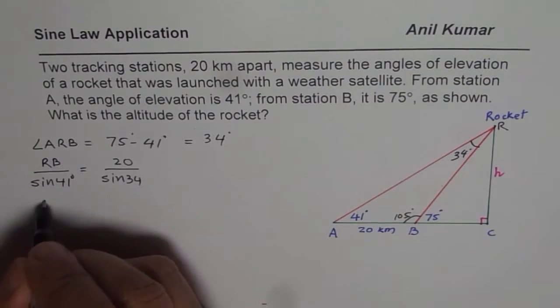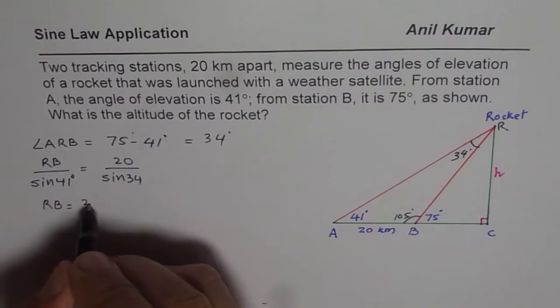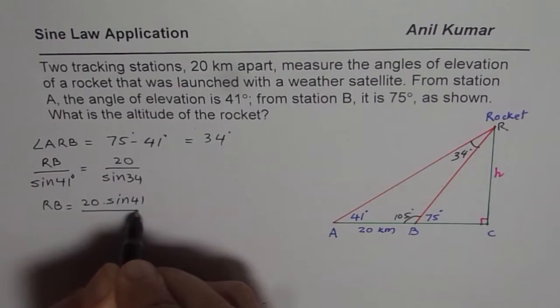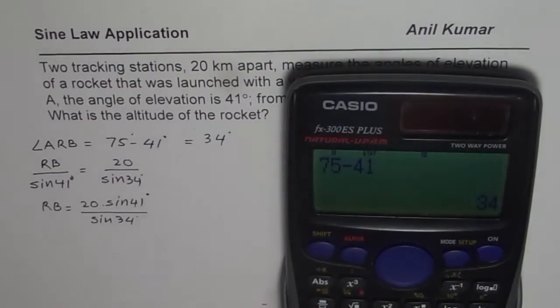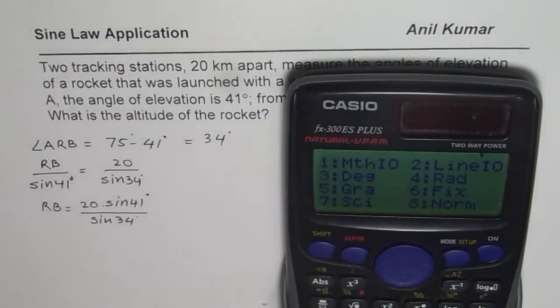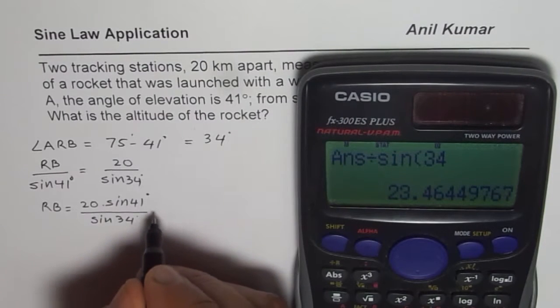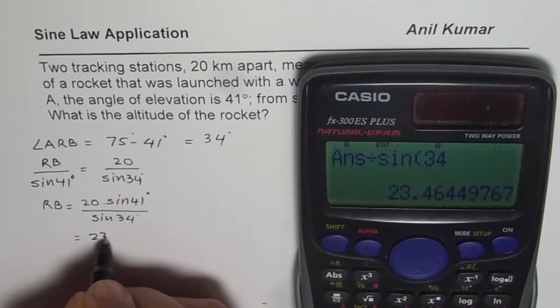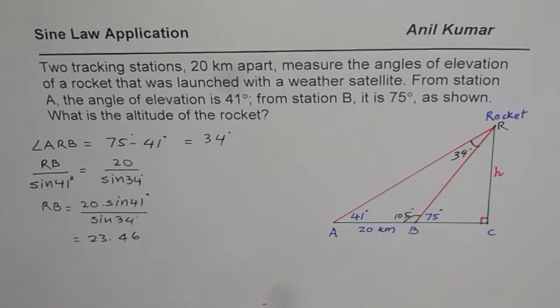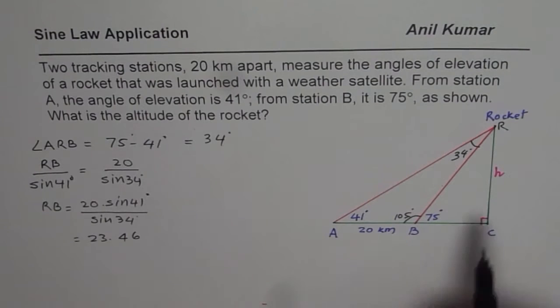Now from here we can find what RB is, so RB is equals to 20 times sine of 41 degrees, divided by sine 34 degrees. So let us use the calculator, the mode of the calculator should be in degrees, so that is the first thing, and now let us find 20 times sine of 41, divided by sine of 34, which is equal to 23.464. We can always round this answer to 23.5, but since we are really interested in the altitude, we can just keep it to 23.46.